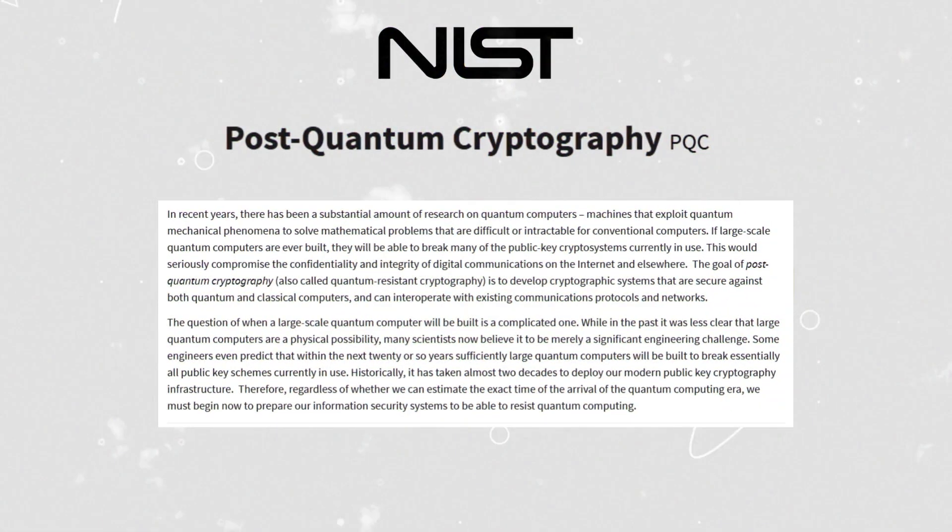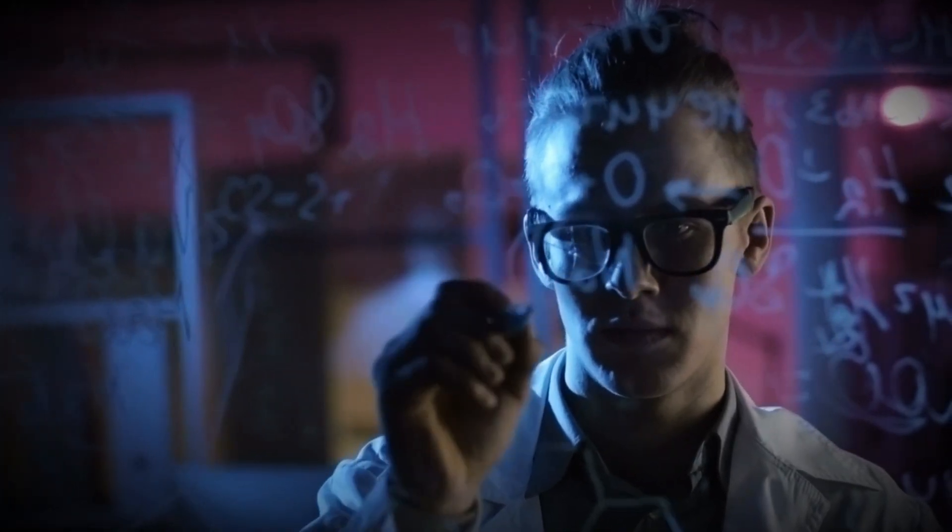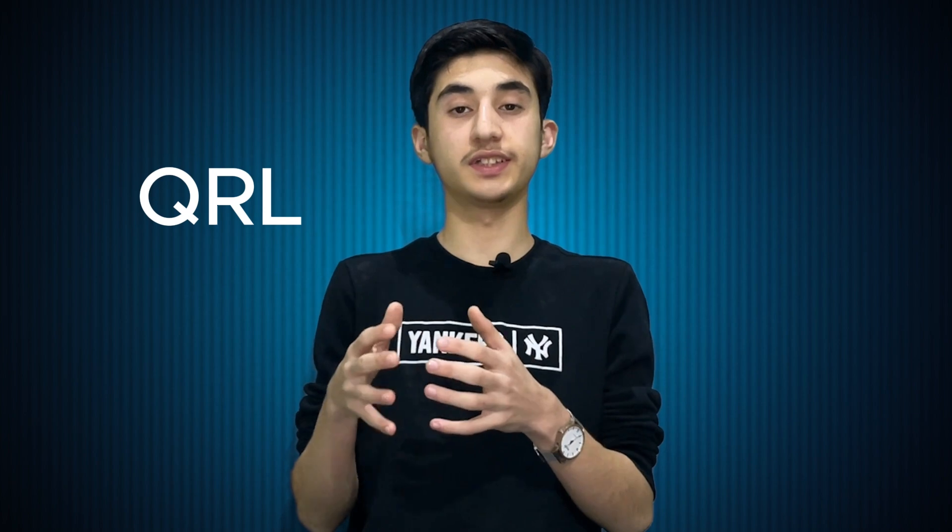In 2023, NIST selected four new encryption algorithms designed to survive the quantum era. Also, scientists are developing new blockchain layers to protect transactions from quantum threats. Some cryptocurrencies like the QRL, Quantum Resistance Ledger, are already designed to oppose quantum threats.